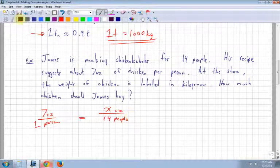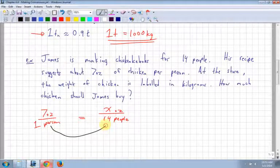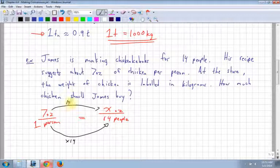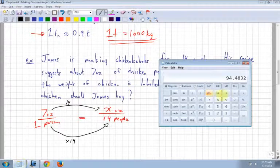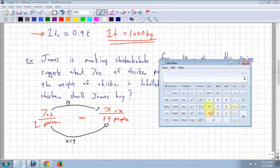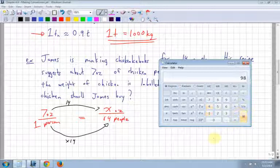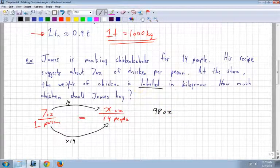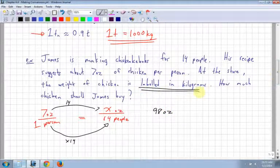And again, we can do our cross multiplication or just notice that this is a simple fraction conversion, right? We just have the denominators being multiplied by 14. So the top should also be multiplied by 14. So we have seven times 14, which is 98. So we actually have an answer of 98 ounces. But remember that it is labeled in kilograms.